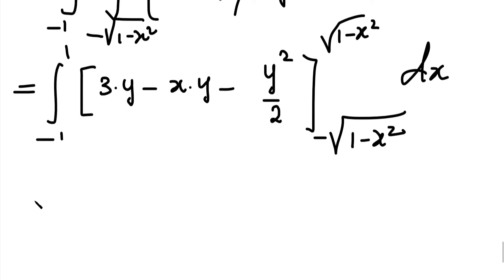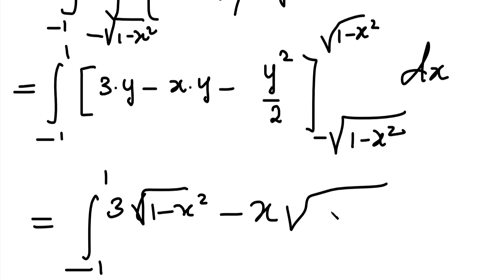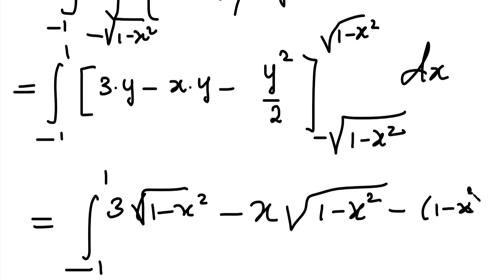Then finally we integrate with respect to x, that is dx, from minus 1 to plus 1. Substituting the upper limit y equal to root of 1 minus x² into 3y gives 3 times root of 1 minus x². Then minus x times root of 1 minus x². Then minus: substituting y equal to root of 1 minus x² into y²/2 gives (1 minus x²) divided by 2.